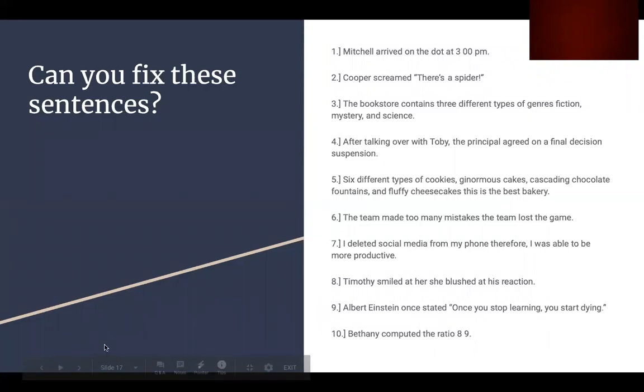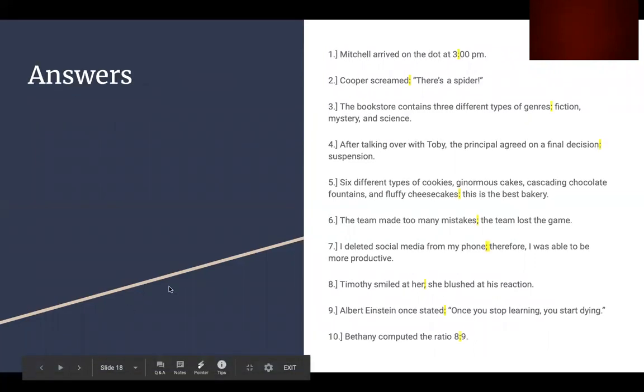Now, let's go over the answers. Mitchell arrived at the door at 3:00 p.m. We went over that when we explained the colons. Cooper screamed, now we have a quote, there's a spider. So the colon will come right after the verb. The bookstore contains three different types of genres: fiction, mystery, and science. And we went over that when we described a series of items.